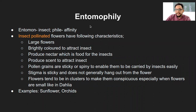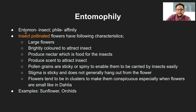The first agent is insect pollination, also called entomophily. 'Entomon' refers to insect and 'phily/phile' refers to affinity. So insects have affinity toward flowers — this process is entomophily and the flowers which undergo insect pollination are called entomophilous flowers.